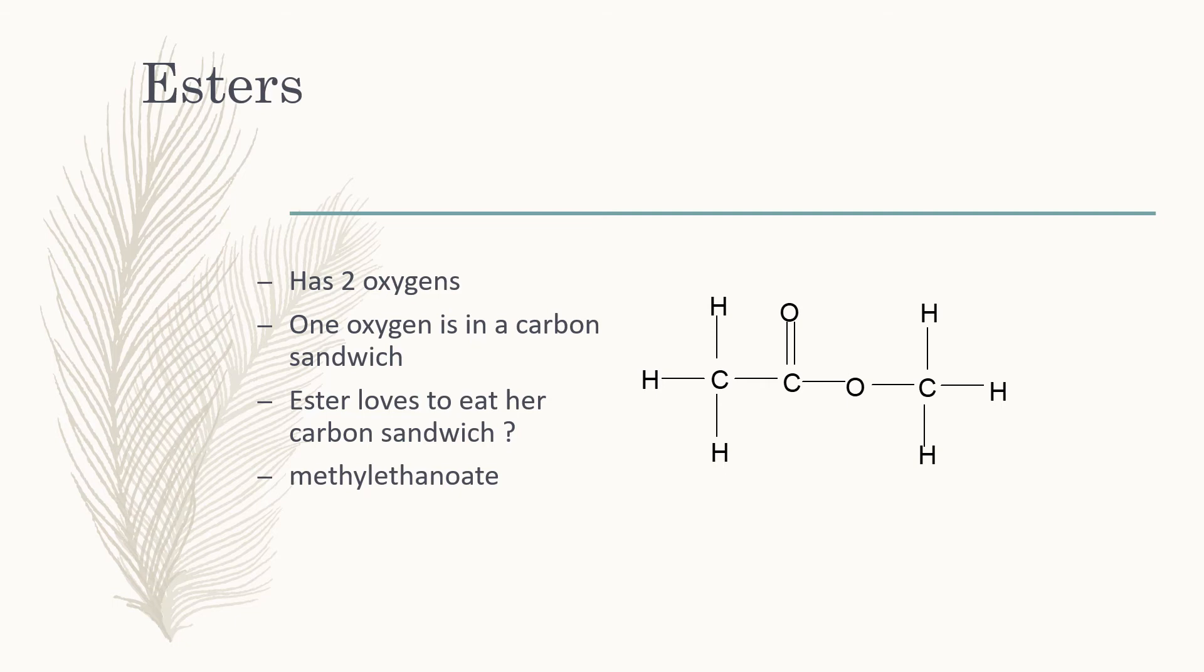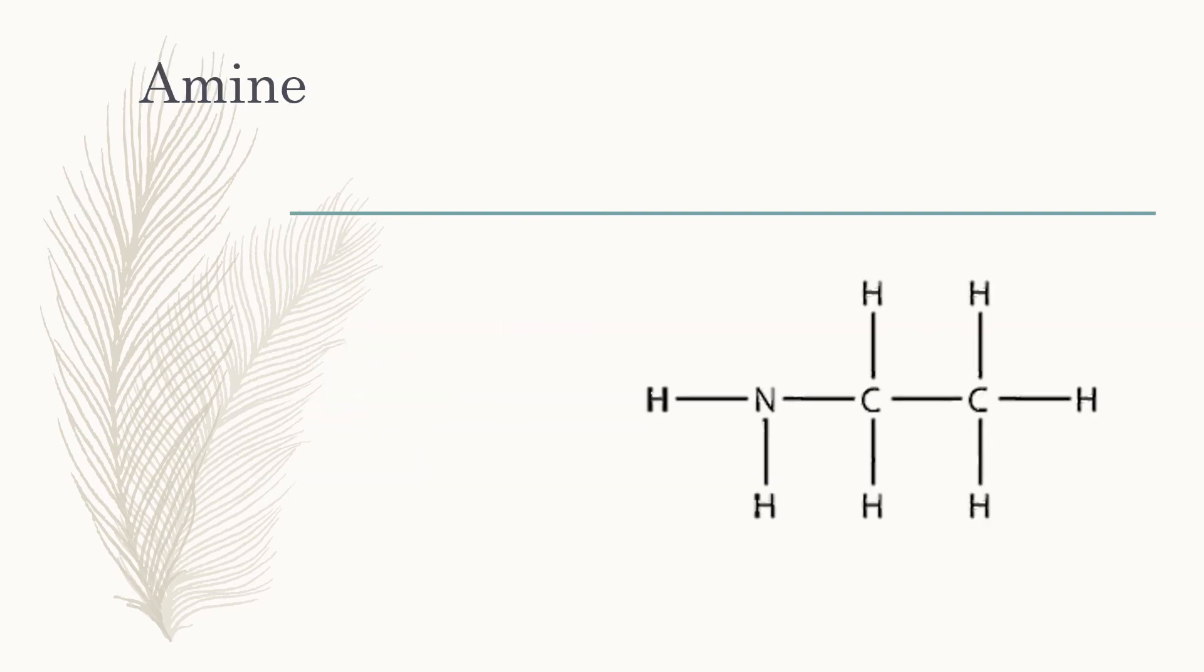Amines have a number of carbons that are single bonded and a bunch of hydrogens, but they have a nitrogen in an NH2 group on the end. We would call this one ethylamine - eth because it's got two carbons and then amine because it's got a nitrogen group present.